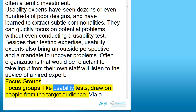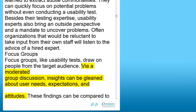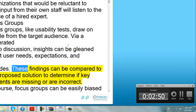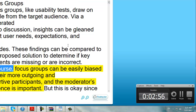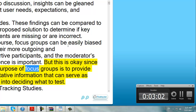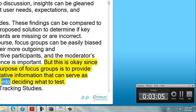Focus groups, like usability tests, draw on people from the target audience. Via moderated group discussion, insights can be gleaned about user needs, expectations, and attitudes. These findings can be compared to the proposed solution to determine if key elements are missing or incorrect. Of course, focus groups can be easily biased by their more outgoing and assertive participants, and the moderator's influence is important. But this is okay, since the purpose of focus groups is to provide qualitative information that can serve as input into deciding what to test.